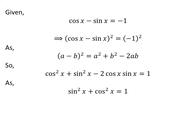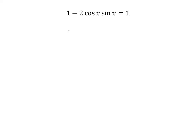We know the famous trigonometry identity: square of sine of x plus square of cosine of x is equal to 1. Applying this identity gives us 1 minus 2 times cosine of x times sine of x is equal to 1. Cancelling out 1 from both sides gives us 2 times sine of x times cosine of x is equal to 0.